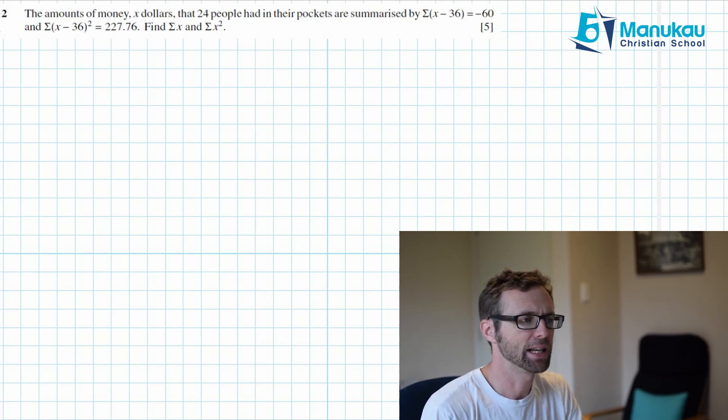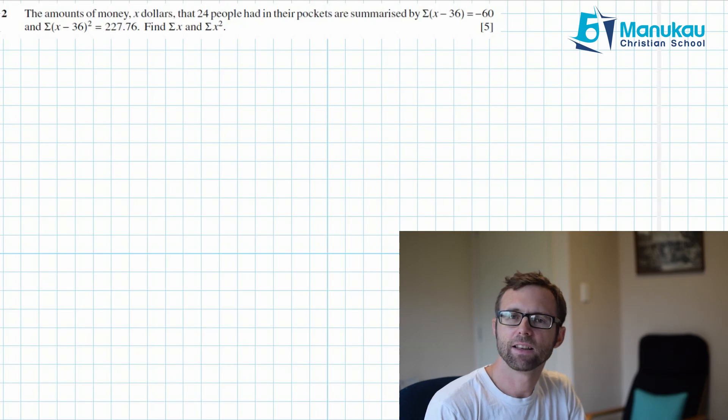So we have some amounts of money, X dollars, that 24 people had in their pockets. And we've got this data summarized by the sum of X minus 36 is equal to negative 60 and the sum of X minus 36 all squared is equal to 227.76, and we are asked to find the sum of X and the sum of X squared. Now remember why do we code data? The reason we code data is that it can make the data easier to work with.